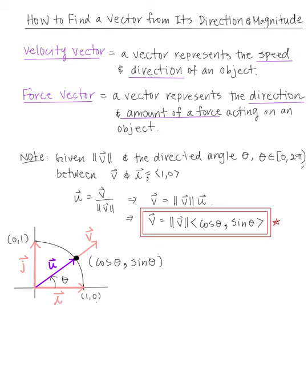Since U equals V divided by magnitude of V, solving for V gives V equals magnitude of V times U. Vector V can be represented as magnitude of V times the vector cosine theta comma sine theta — this is our unit vector U. I drew a picture showing vector i and vector j, with vector U at angle theta. The x-coordinate is cosine of theta and the y-coordinate is sine of theta.